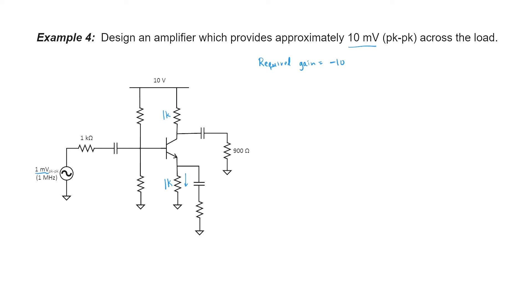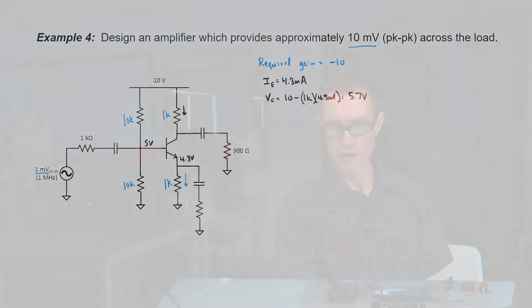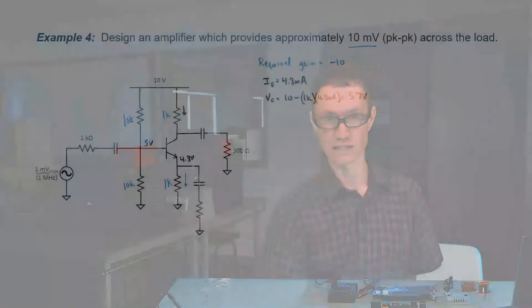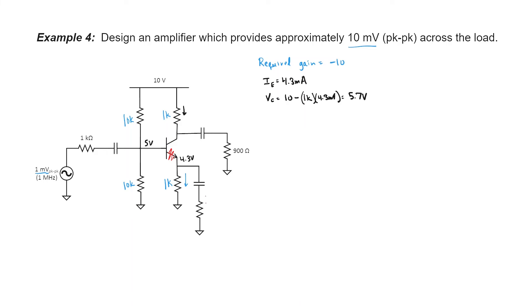A good ratio of resistors on the left side of the transistor to resistors on the right side is about 10. Therefore, I'm going to choose 10 kilohms on the left, which causes the base voltage to be 5 volts, the DC emitter voltage to be 4.3 volts, and the emitter current to be 4.3 milliamps. The collector voltage is then 10 minus 1 kilohm times 4.3 milliamps, or 5.7 volts — my transistor is properly biased in the forward active region. Let's calculate my emitter resistance: r sub e is 26 divided by my emitter current in milliamps, which is about 6 ohms.